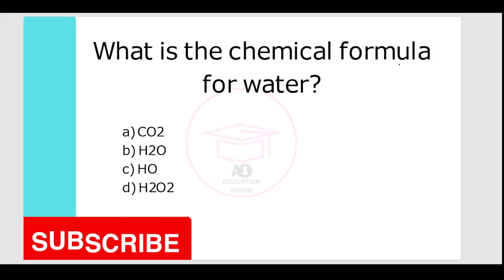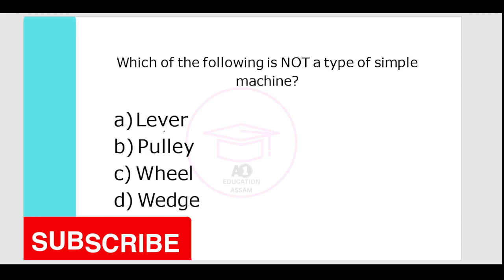What is the chemical formula for water? Options are CO2, H2O, HO, or H2O. Your correct answer is option B, H2O.